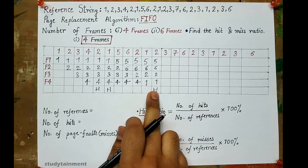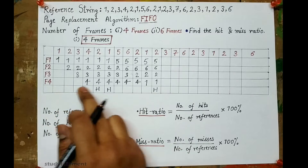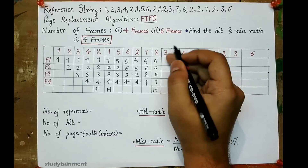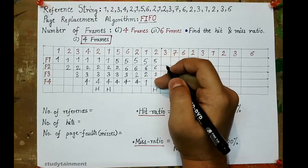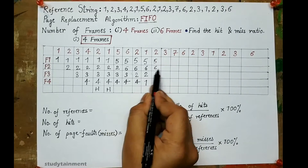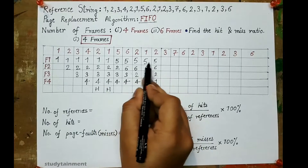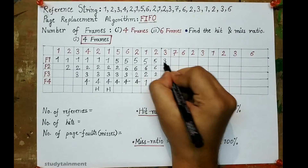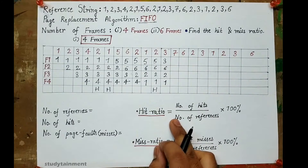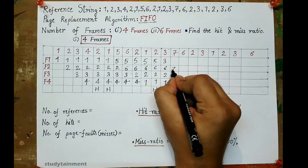We note the hits and will fill in the misses at the end. Now 3 comes — 3 is not present, so it is a page fault. Among 5, 6, 2, and 1, page 5 is the oldest because it has been continuously present for 5 steps, so 5 will be replaced with 3. Now 7 comes — 7 is also not present, so it is a page fault. Page 6 is the oldest, so 6 will be replaced with 7.